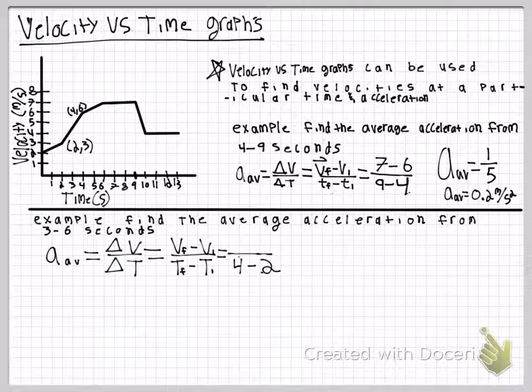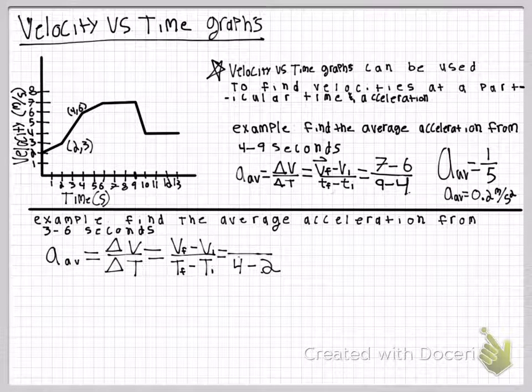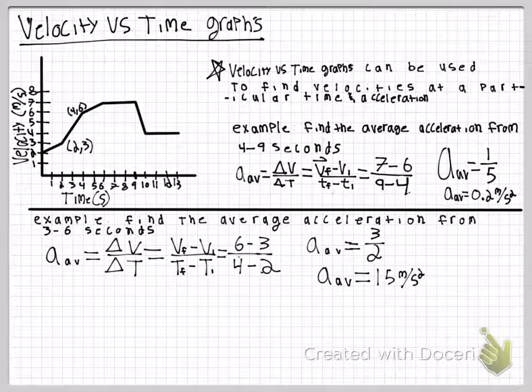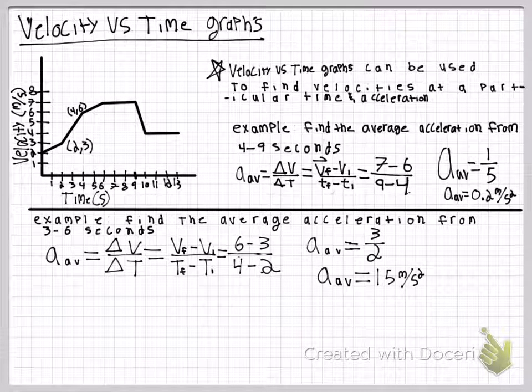We use the same equation, which leads us to 4 minus 2 for the time and 6 minus 3 for the velocity, as the points are 2,3 and 4,6. This gives us 3 divided by 2, or an average acceleration of 1.5 meters per second squared.